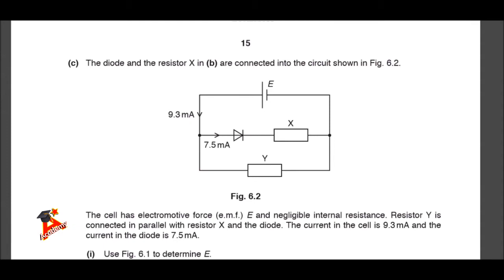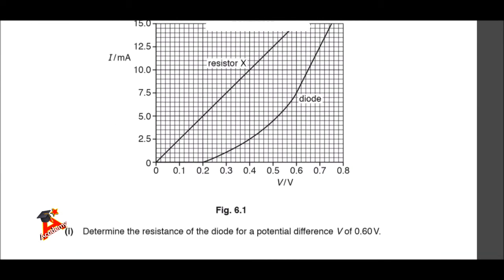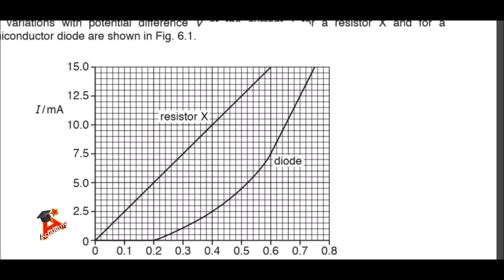Now we have to find the voltage across the resistor and the voltage across the diode and add them together. The voltage across the diode happens to be 0.6 volts, because that's the voltage across the diode when we have a current of 7.5 milliamps through it from the graph above. We're supposed to use Fig 6.1 to determine E.